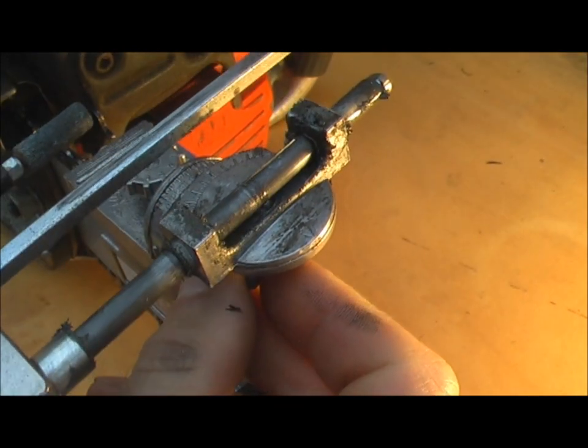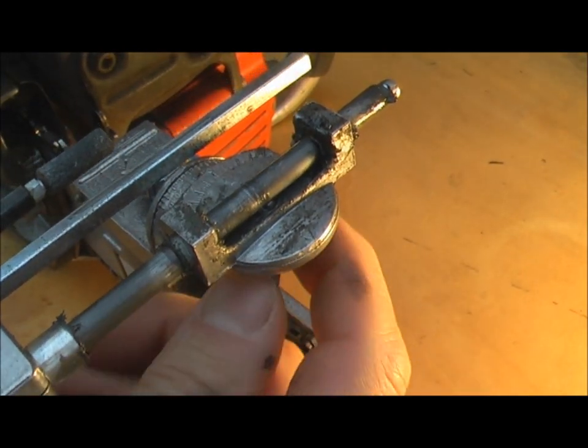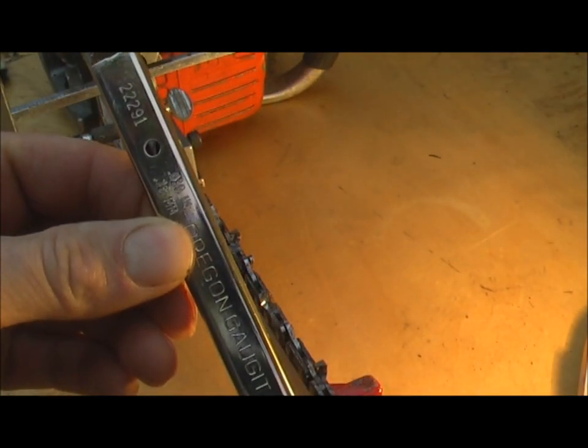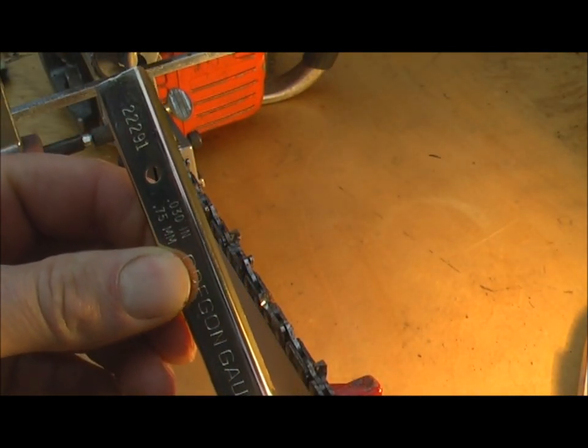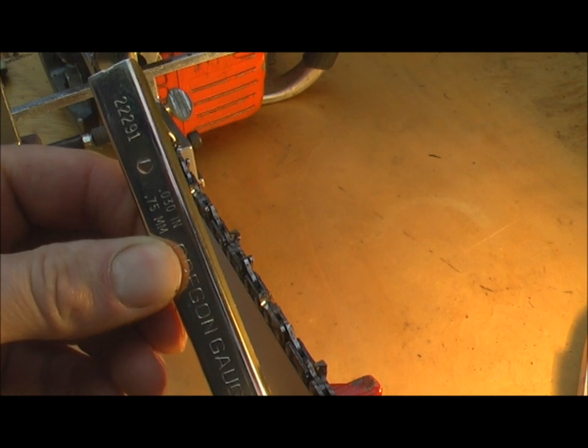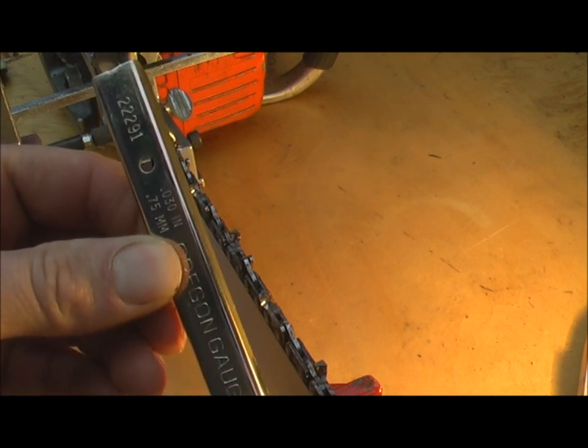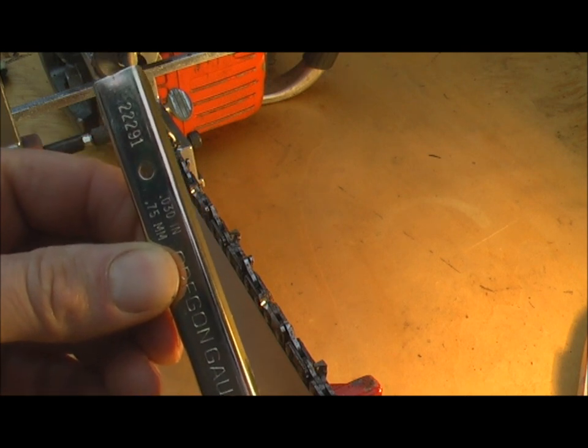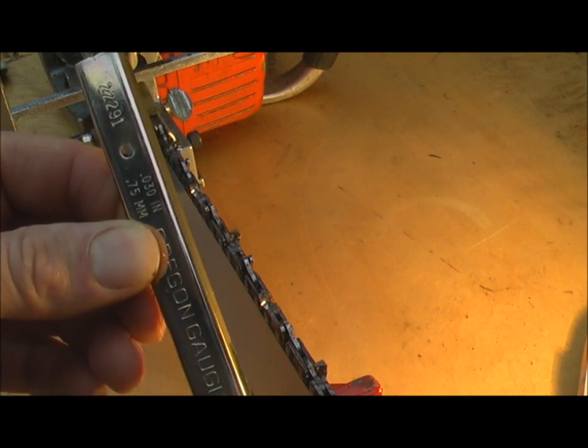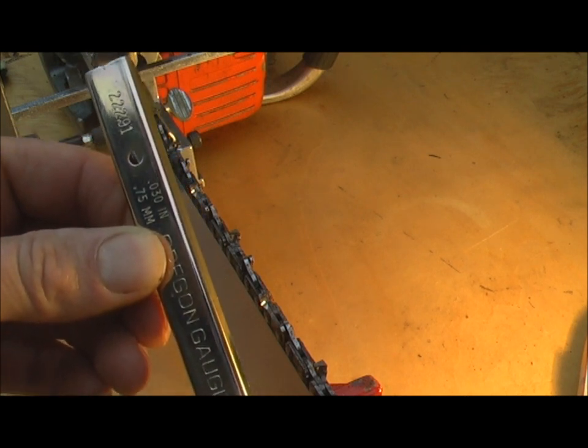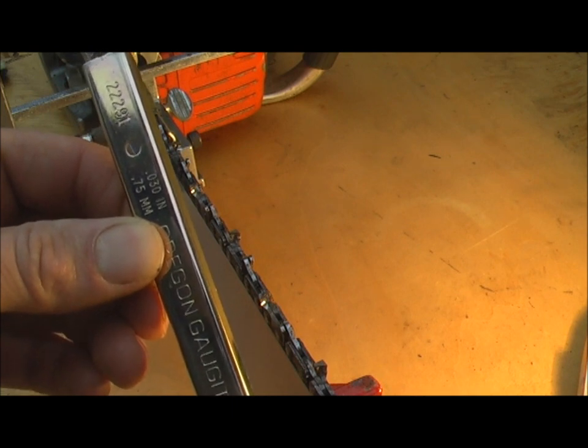Next I'm going to set the angle to zero. So I've got this depth gauge which does to 0.030 an inch. Usually with this chain it would be 0.025 thou but as the cutters are so small now you need to increase the distance between the depth gauges and the cutter top plate.